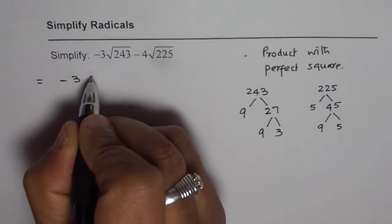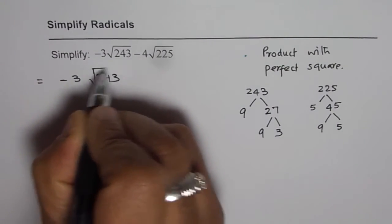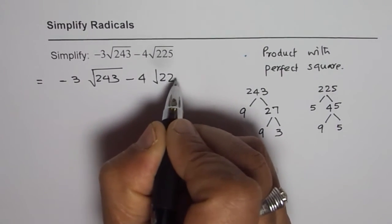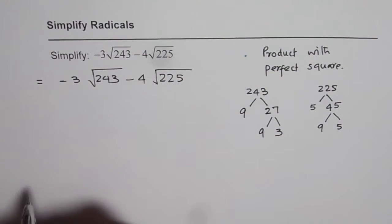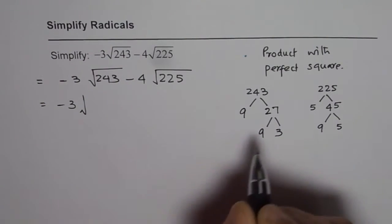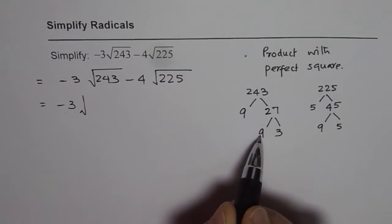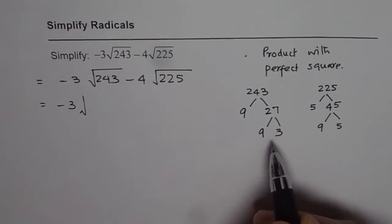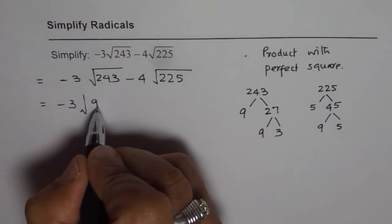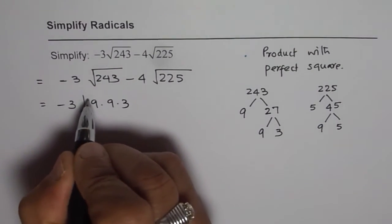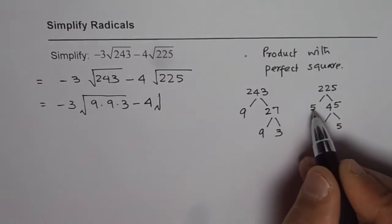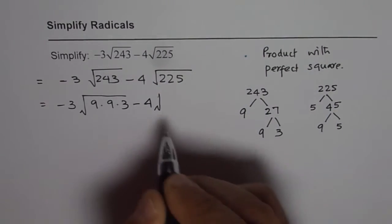So we can rewrite the expression. We have minus 3 times square root of 243, minus 4 times square root of 225. Square root of 243 can be written as square root of 9 times 9 times 3, and 225 can be written as 5 times 5 times 9.